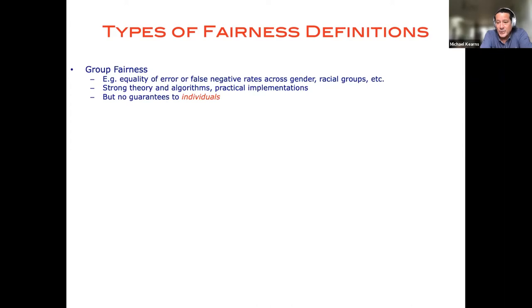So in these notions, you basically pre-identify what attributes or groups you would like to protect and what harm you would like to protect them from. So, for instance, in a consumer lending application, we might think of the harm that can be caused to individuals as false rejections, sort of falsely denying a loan to somebody that would have repaid it.